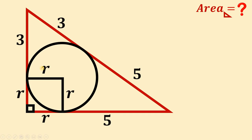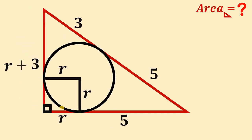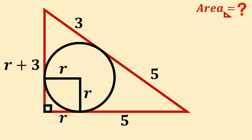Now, taking note of the leg segments 3 and R: if we combine these, one leg of this right triangle must be equal to R plus 3. Also, the other leg of this right triangle must be equal to R plus 5.